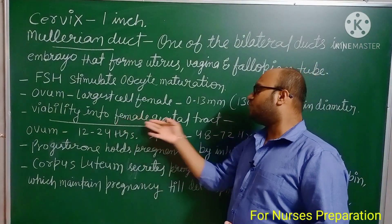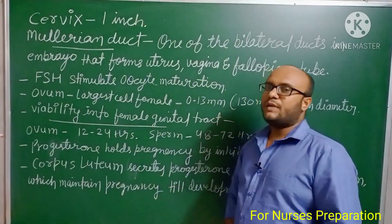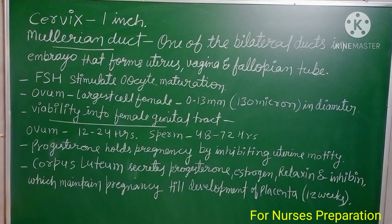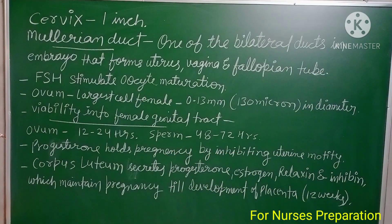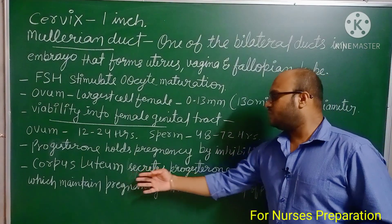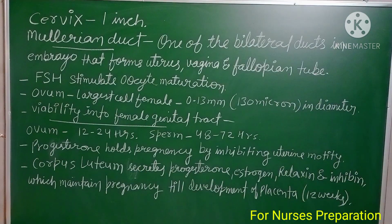The viability of the ovum in the female genital tract is 12 to 24 hours, whereas sperm is viable for 48 to 72 hours. Progesterone maintains pregnancy by inhibiting uterine motility. The corpus luteum secretes progesterone, estrogen, relaxin, and inhibin, which maintain pregnancy until the development of the placenta — approximately up to 12 weeks.